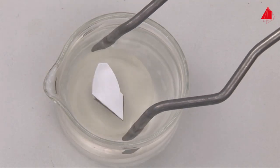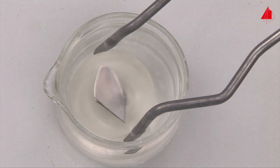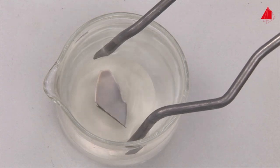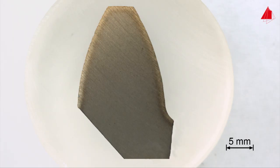This is a tooth from a case-hardened gear wheel. The surface region of the gear wheel has first been carburized at high temperature and then quenched. The etched sample shows the smooth transition from the carburized and hardened surface region to the softer interior.